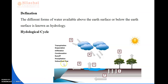This is the hydrological cycle. In the hydrological cycle, some of the terms are: transpiration, evaporation, infiltration, condensation, runoff, precipitation, and subsurface flow. In the hydrological cycle, streams, lakes, rivers, and ponds get heated by the sun, and water rises by means of evaporation or transpiration.